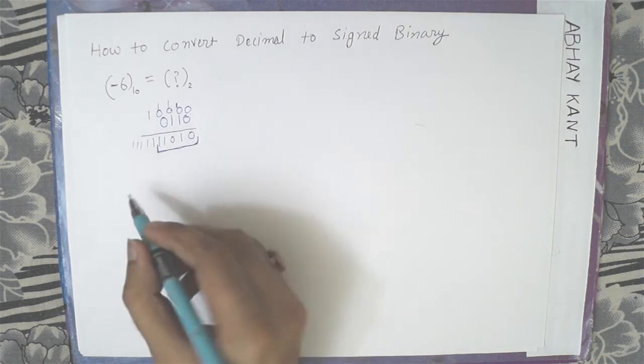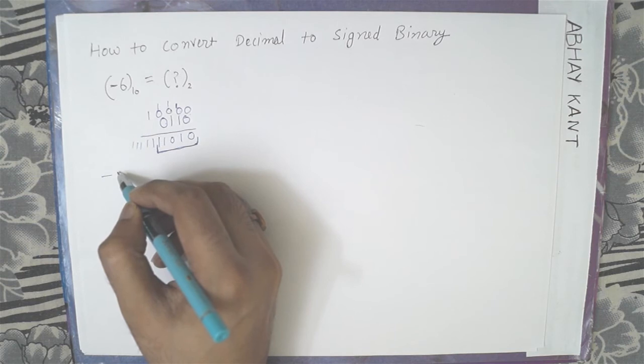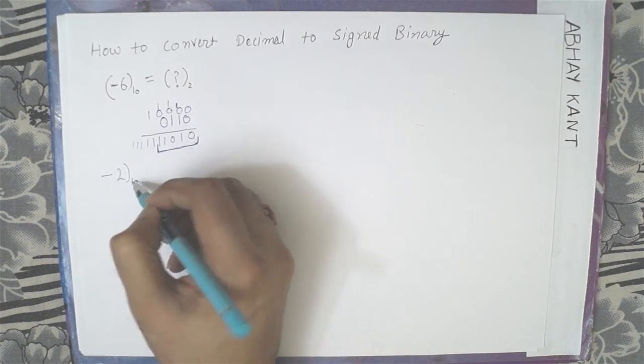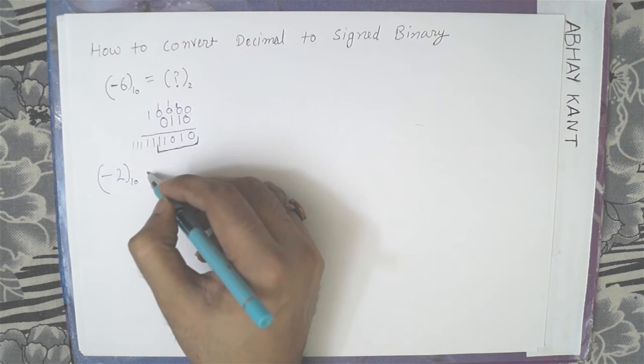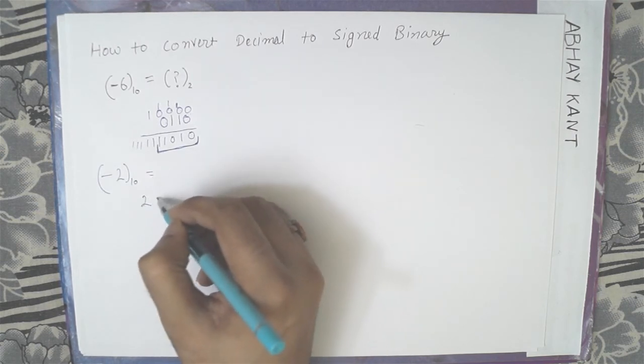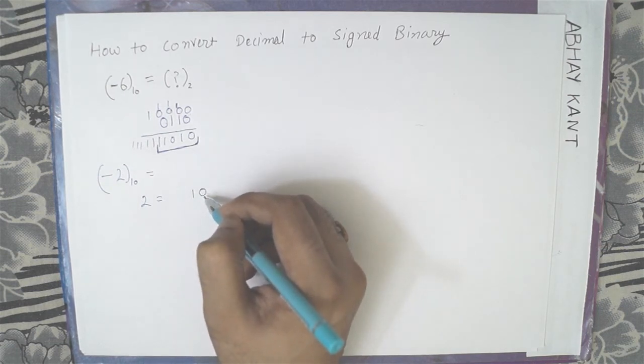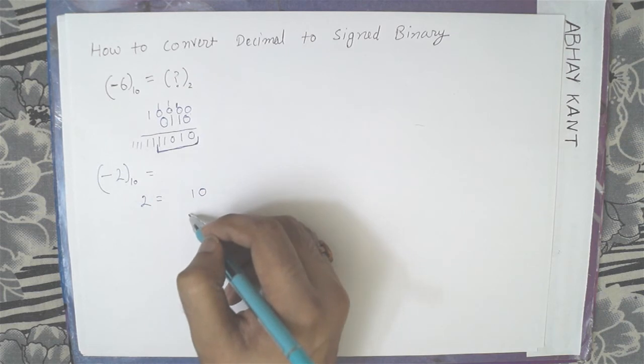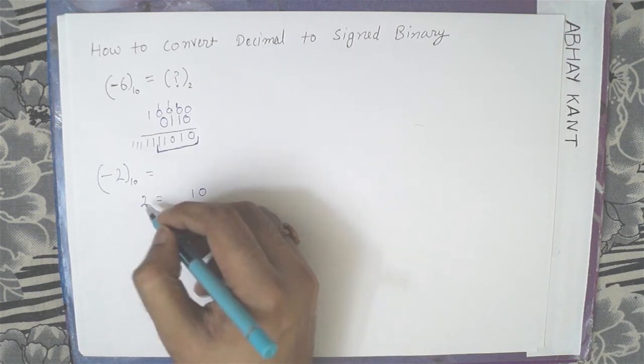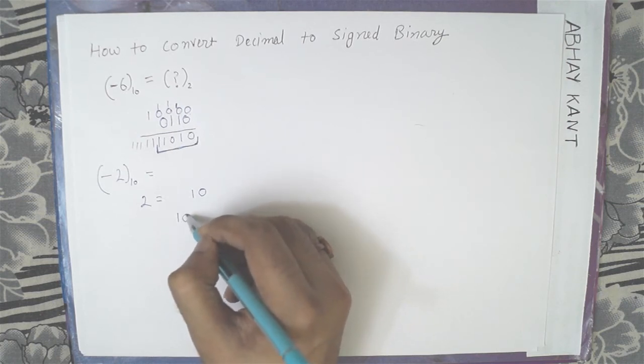Now let's see. We have another number, negative 2. How do we represent in signed binary? So first of all we take the number 2 and write it in binary. So number 2 is 1, 0. Now we have to calculate the, it's negative 2.